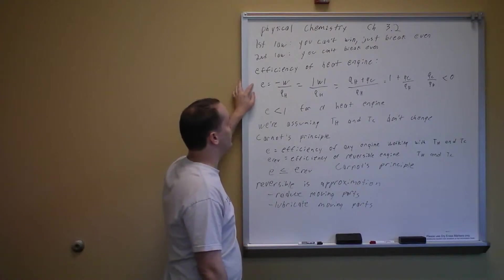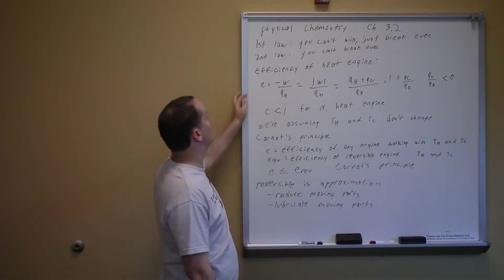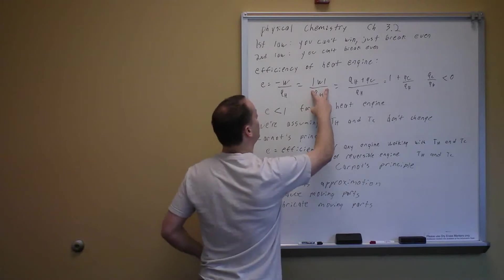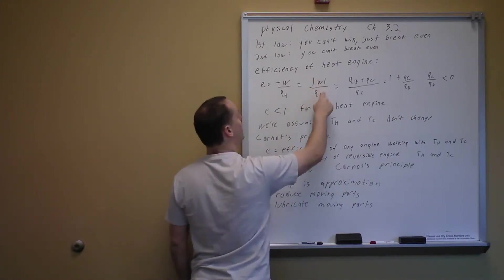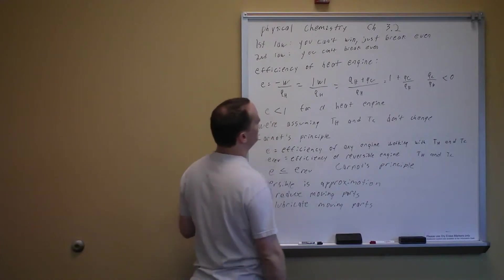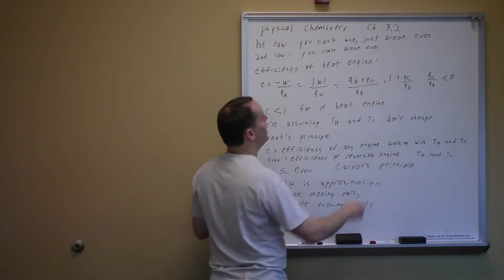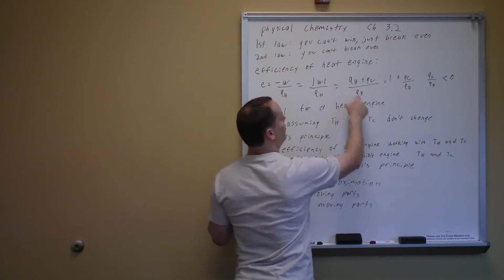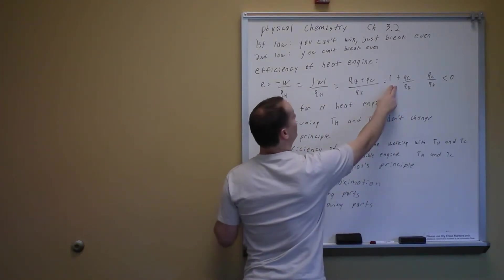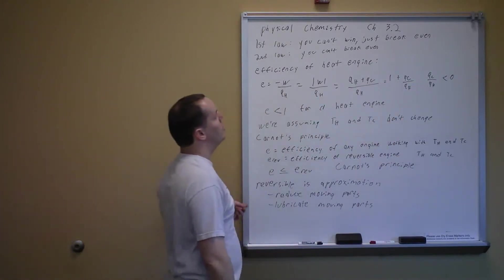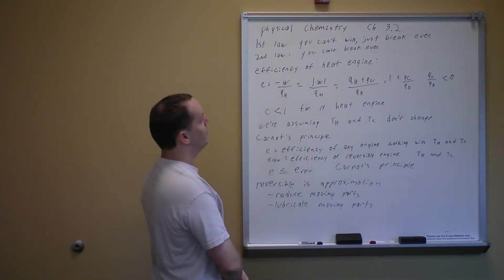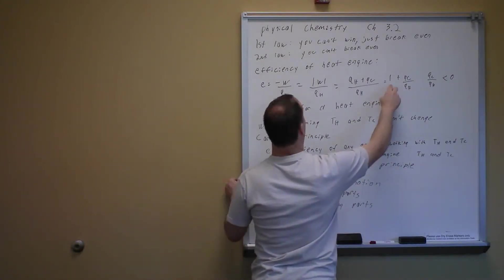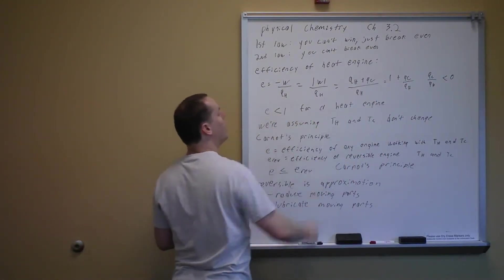The efficiency of a heat engine: E equals minus W over QH, or the absolute value of W over QH. If you solve for QH, you get QH plus QC. Substituting that in and simplifying gives efficiency equal to 1 plus QC over QH. Since QC is negative (coming out) and QH is positive (going in), this ratio is negative, so efficiency is less than 1 for any real heat engine.